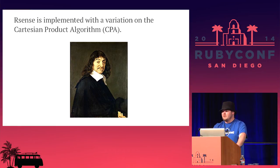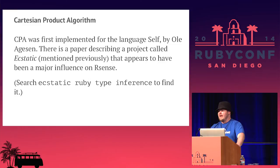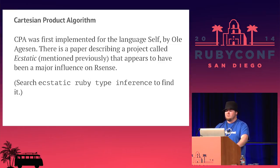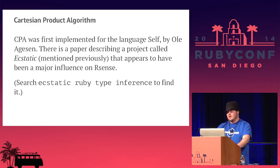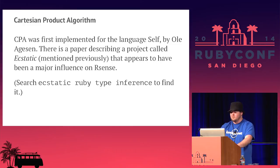R-Sense is implemented with a variation on the Cartesian Product Algorithm, named after Descartes. CPA was first implemented by Ole Agasson for the language Self, and there is also a paper describing a project called Ecstatic — the algorithms described in the Ecstatic paper are almost identical to what is actually implemented in R-Sense. I'm happy to share links to those papers if you're interested.